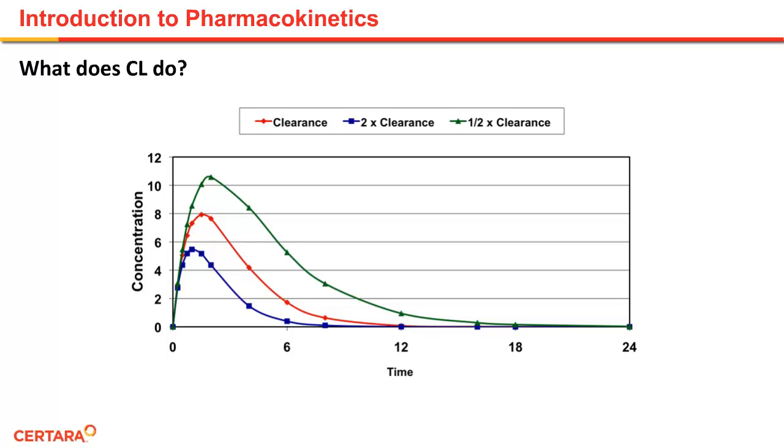Clearance is the set of processes that the body uses to eliminate the drug from the body. As clearance increases going from the red to the blue line, we can see that concentrations are lowered more quickly and the drug is gone faster. As we decrease clearance, or we decrease the rate of elimination, we go from the blue line to the green line, which is higher. The drug reaches higher levels and also stays for a longer period of time.